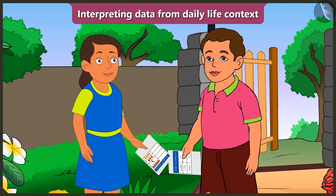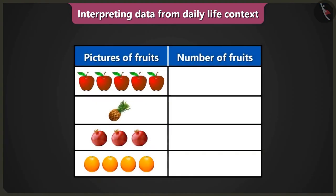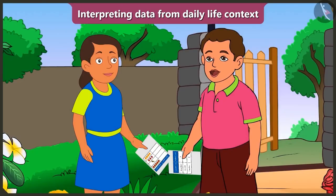Now, show me the second table which mummy has given to you. Here it is. Hey, there are only pictures of fruits in this table. The number of fruits are not written. What will you do now? I will go to the kitchen now and count the number of fruits and come back.